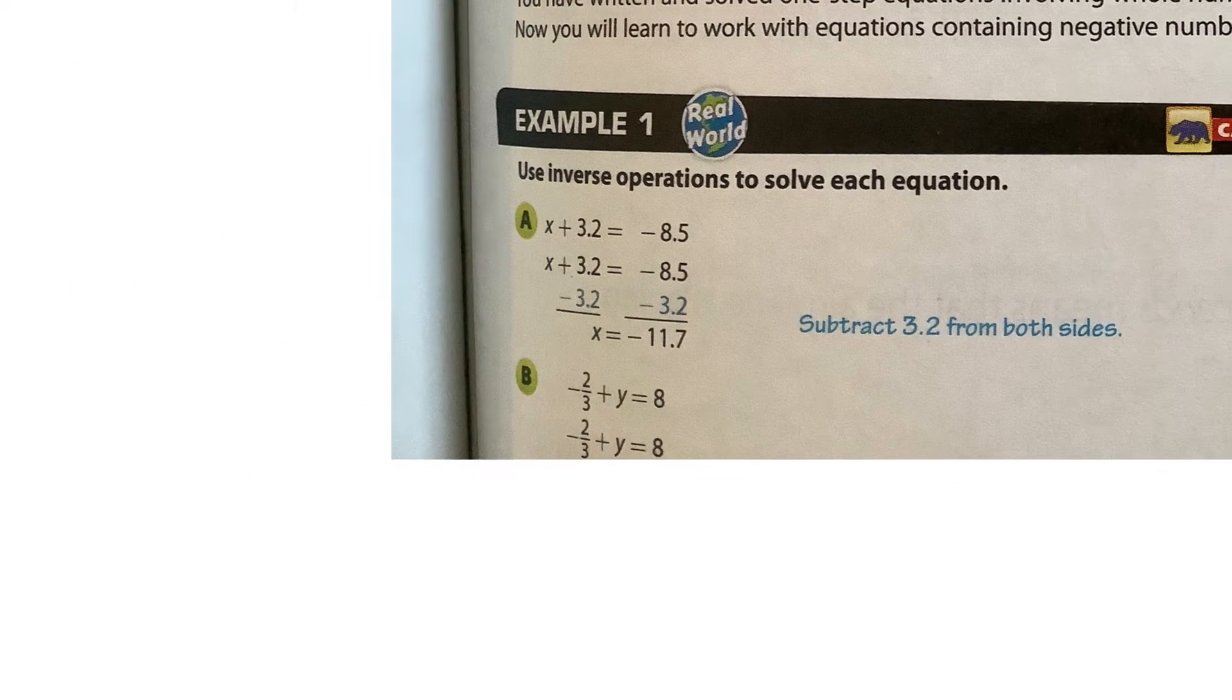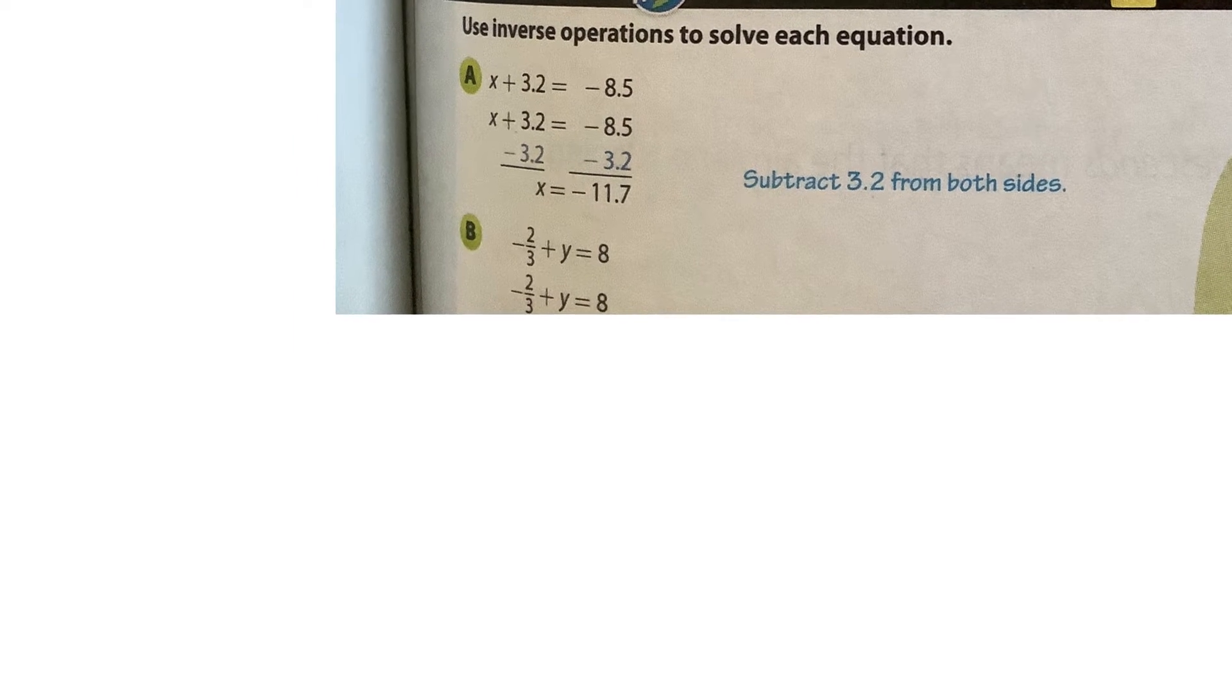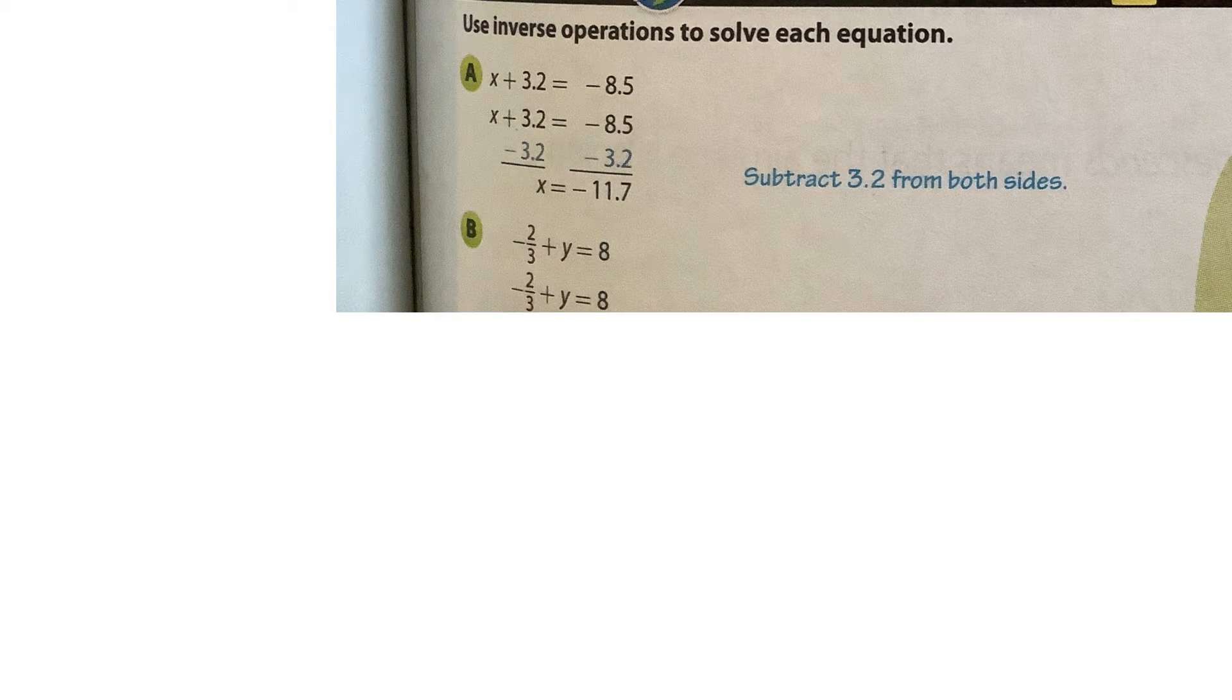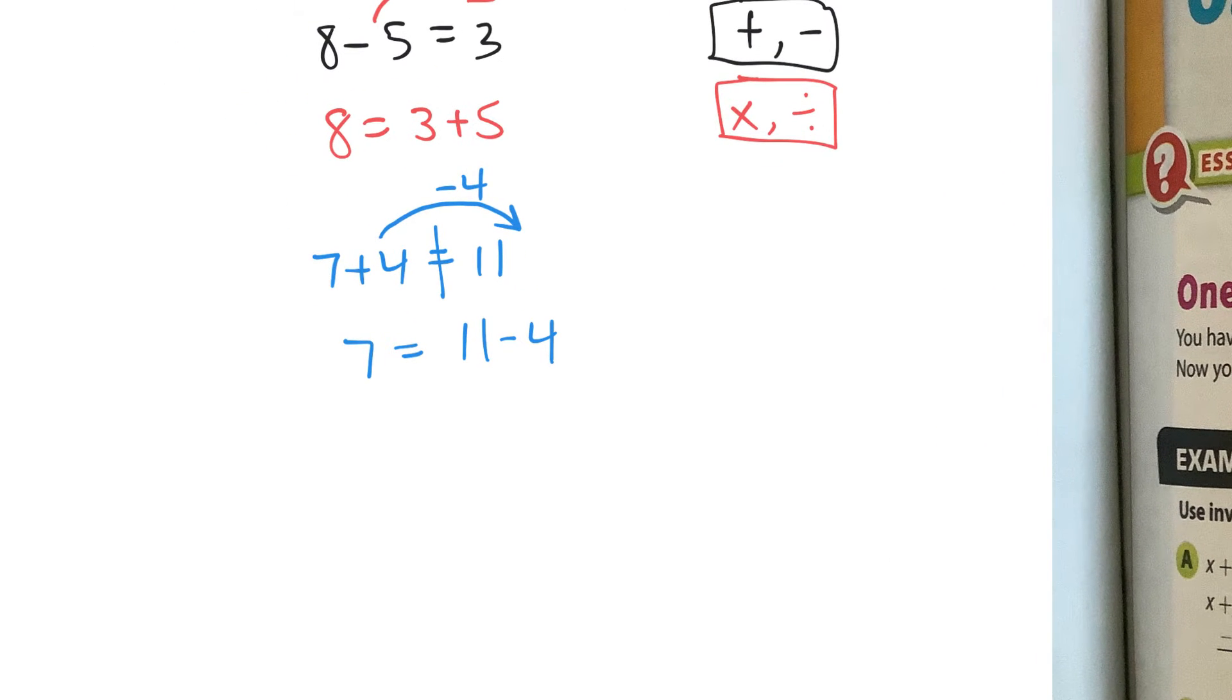So let's take a look at this here. In example 1 from the textbook, I want to rewrite this. Problem A is x plus 3.2 is equal to negative 8.5. And I'm going to use the idea that I had right here. I'm going to use this idea where if I'm adding 4, if I bring it to the other side of the equal sign, it would be the same as subtracting 4.